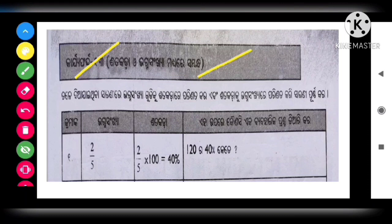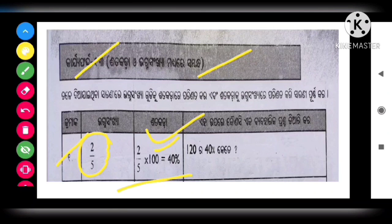2 by 5 is the fraction (Bhagna Sanjaya). To convert this fraction to a percentage, you multiply by 100. Therefore, the answer is 40 percent.